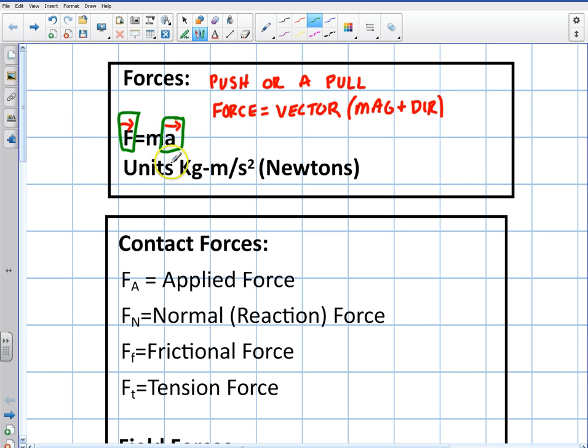So the units of force are kilograms meters per second squared. The kilograms comes from the mass and then meters per second squared comes from the acceleration. So these are the original units. There's a prepackaged unit, which we'll call it as a derived unit. It's called a Newton or the letter N.